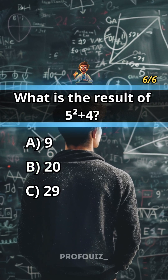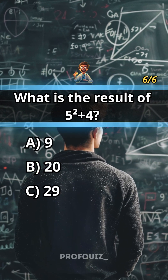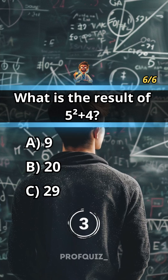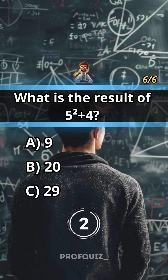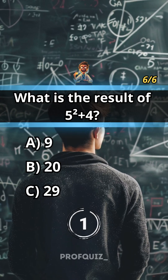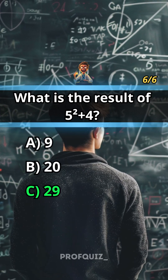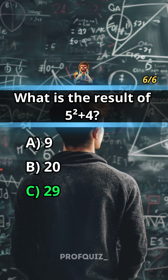What is the result of 5 squared plus 4? Answer: C, 29. Share your score in the comments.